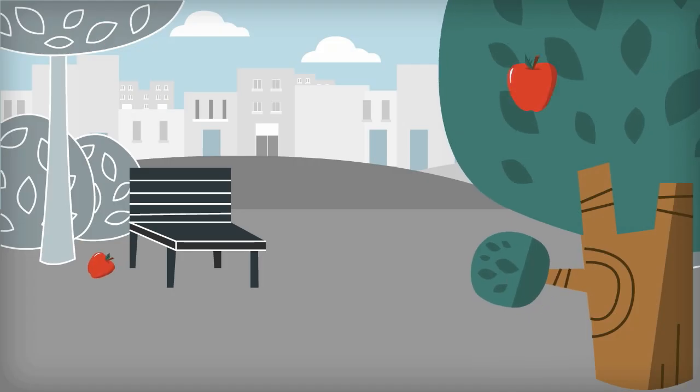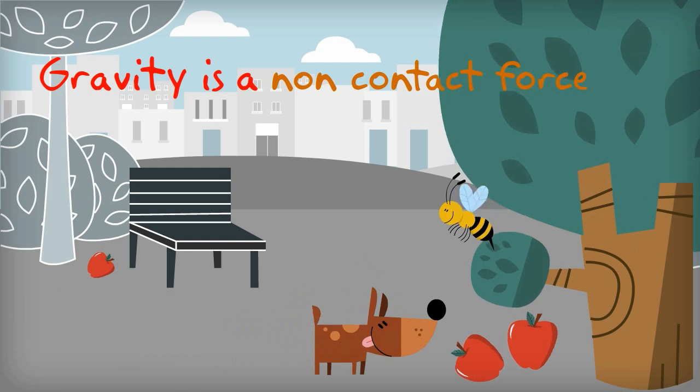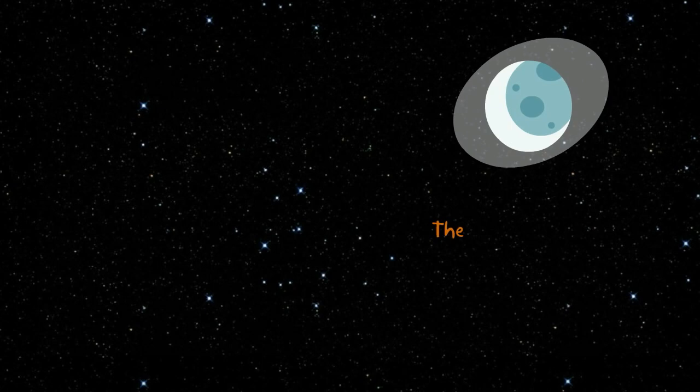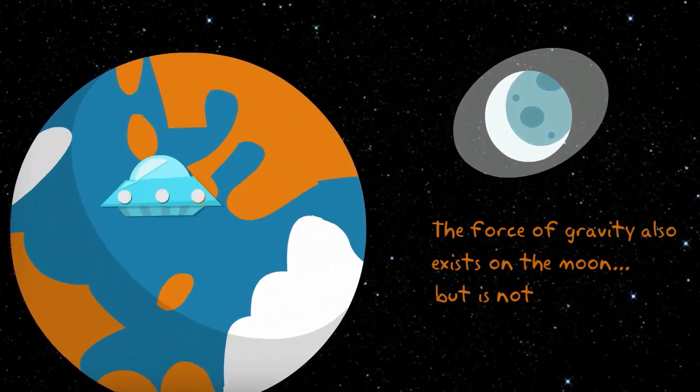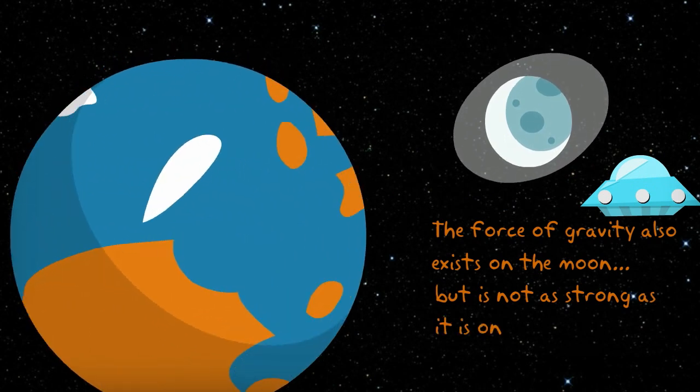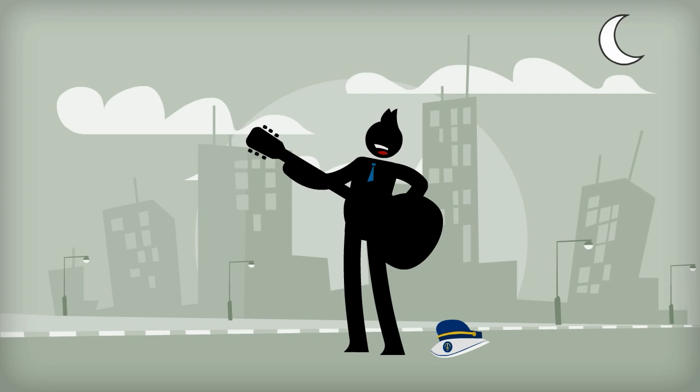The force that makes things fall to the ground is called gravity. Gravity is an example of non-contact force. Gravity pulls an object towards the Earth. The force of gravity also exists on the Moon, but it is not as strong as it is on the Earth. When an object rests on a surface,